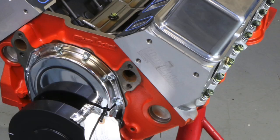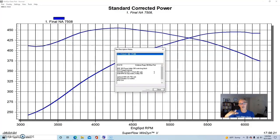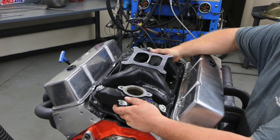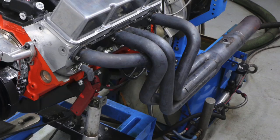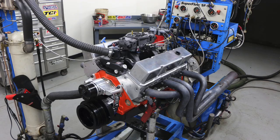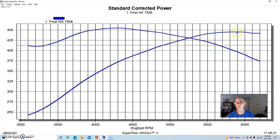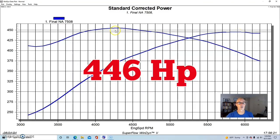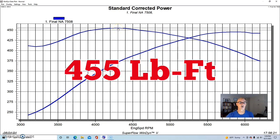This motor was a 383 stroker, 9-to-1 compression, with Blueprint aluminum heads. We augmented it with a camshaft - 536/555 lift, 224/236 degree duration, 113 degree lobe separation angle. We installed an Edelbrock Air Gap intake manifold, Holly 750, dyno headers, and an MSD distributor. Ran it first naturally aspirated where it produced 446 horsepower and 455 foot-pounds.